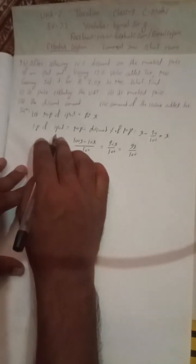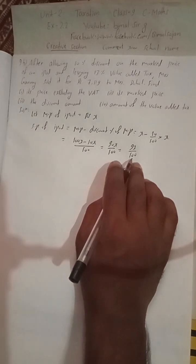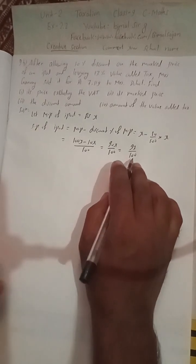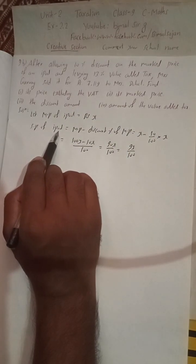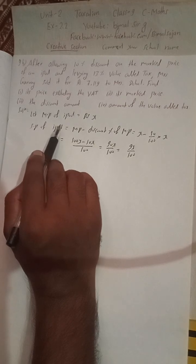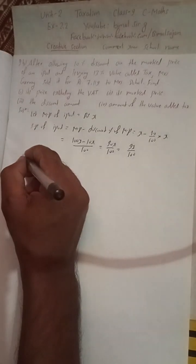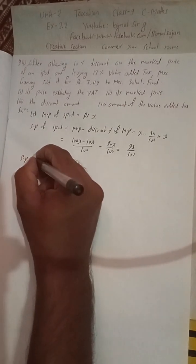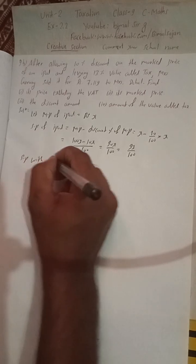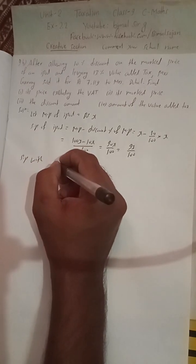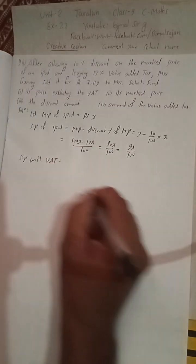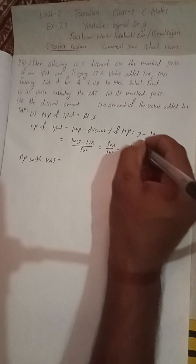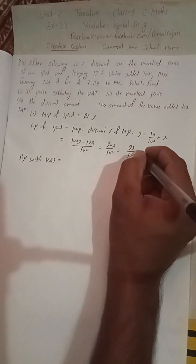We got the SP without VAT. Now we can find SP with VAT. Selling price with VAT will be the selling price plus VAT applied on this amount.